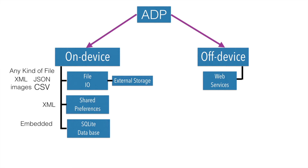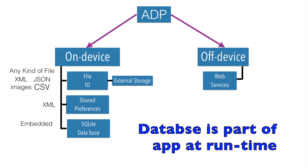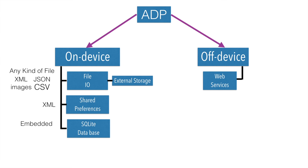SQLite is an embedded database. Typically you might have seen databases present on a separate machine acting as a server, where an application client hits the server and the server responds with data. That is not how it works here. Embedded database means the database is part and parcel of the application — it is not a separate entity. That is why we use the term embedded database.